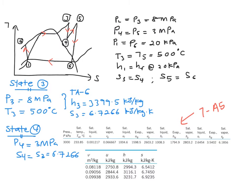However, the information that you have over here is your S4 equals S3. And if you have a look at your entropy value over here, your 6.7266 is already out of the value of 6.1.